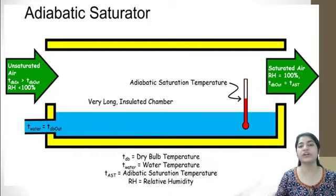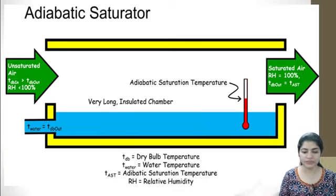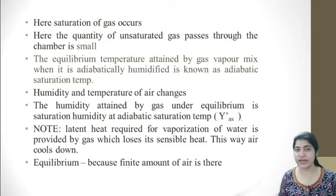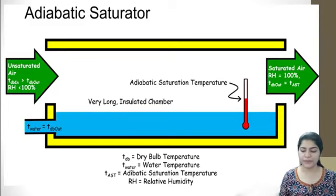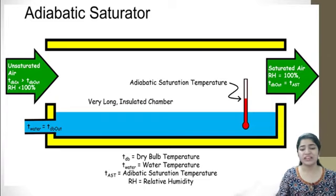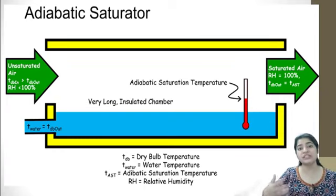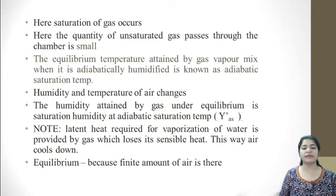This is a very long insulated chamber — insulated because the process is carried out adiabatically, with no heat input or output. The quantity of unsaturated gas passed through the chamber is small. The equilibrium temperature attained by the gas-vapor mixture when it is adiabatically humidified is known as the adiabatic saturation temperature. Humidity and temperature of the air change: the inlet air has a dry bulb temperature and relative humidity less than 100%, while the outlet air is saturated.